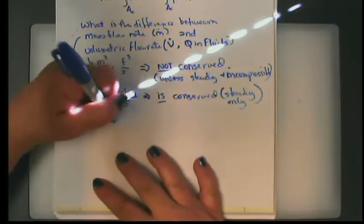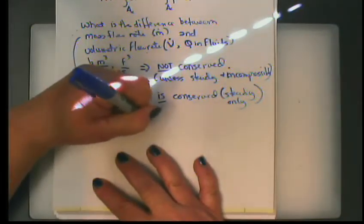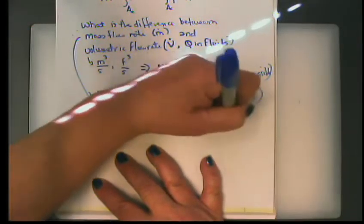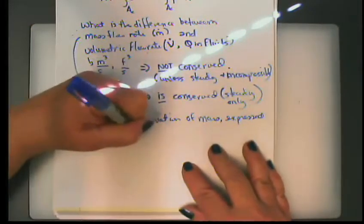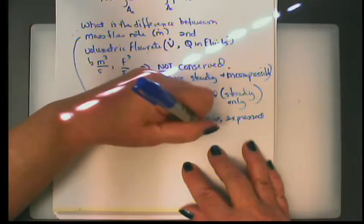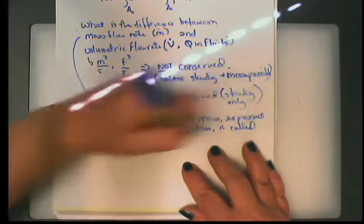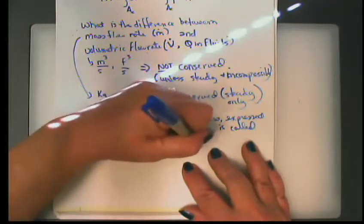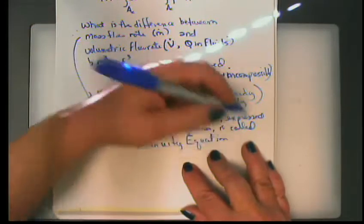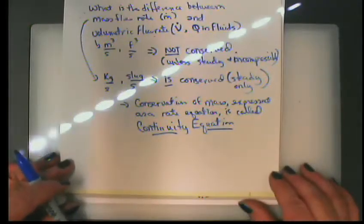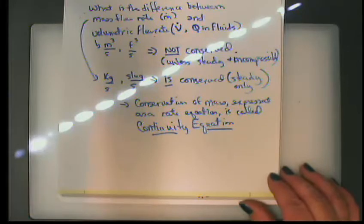This whole idea is called the conservation of mass. The conservation of mass expressed as a rate equation — talking about rates of mass rather than amounts — is sometimes called the continuity equation. Basically, we're saying: if we can account for all the masses in the control volume and all the masses coming in and out, we can account for all of the masses.